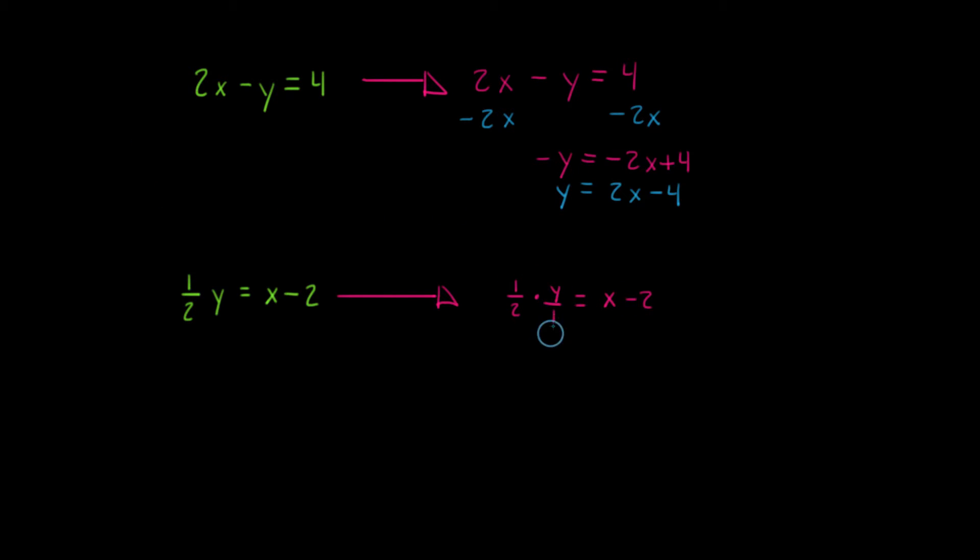Now 1 times y, well that's simply y over 2 times 1, which is 2, is equal to x minus 2.